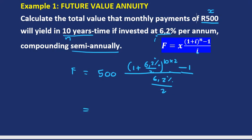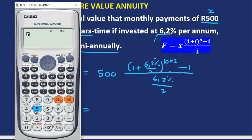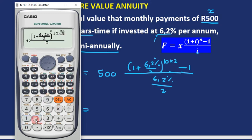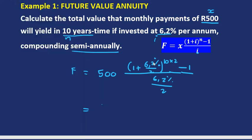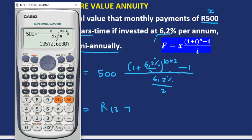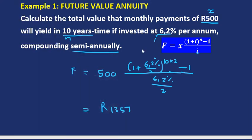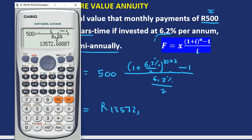You can check out the solution on your calculator. Take 500, multiply by 1 plus 6.2% over 2, raised to the power of 10 times 2, minus 1, divided by the interest rate 6.2% compounding semi-annually divided by 2. These 500-rand payments in 10 years' time will become R13,572.69.